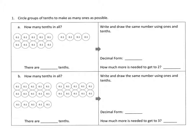Number one, part A — how many tenths in all? Let's count: we've got one through fourteen. So we have fourteen-tenths, which looks like fourteen over ten — that's an improper fraction, a fraction greater than one. So we need to take that fourteen-tenths and turn it into a decimal. We know we're going to have a whole number in there because it's a fraction greater than one — the numerator is bigger than the denominator.